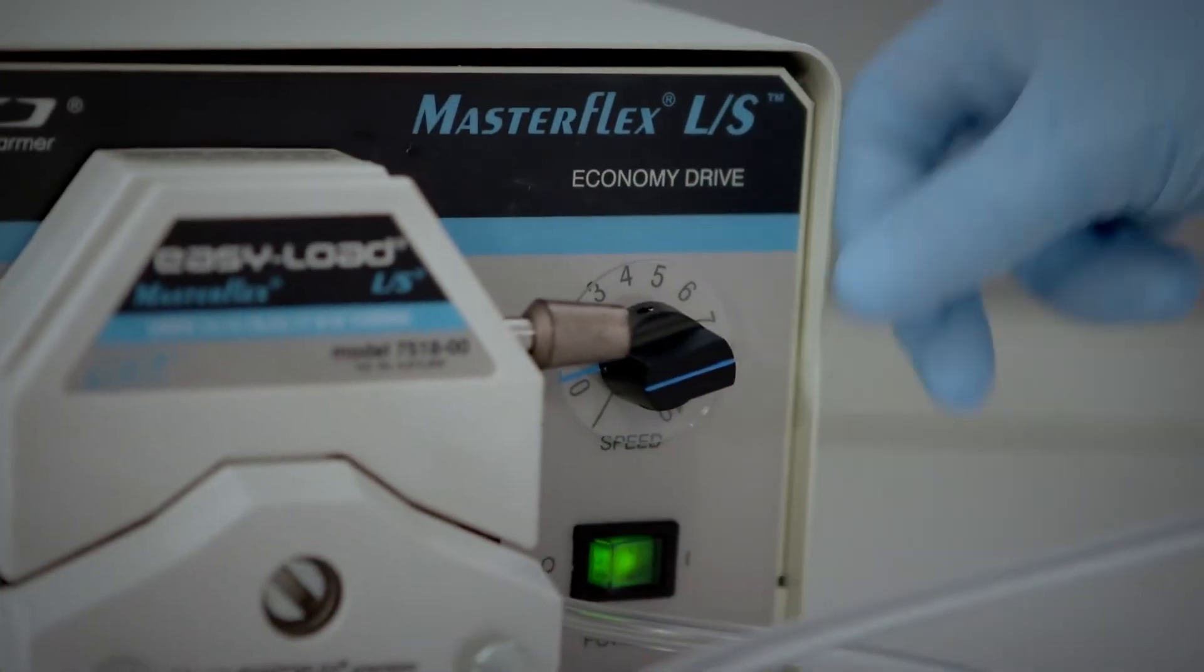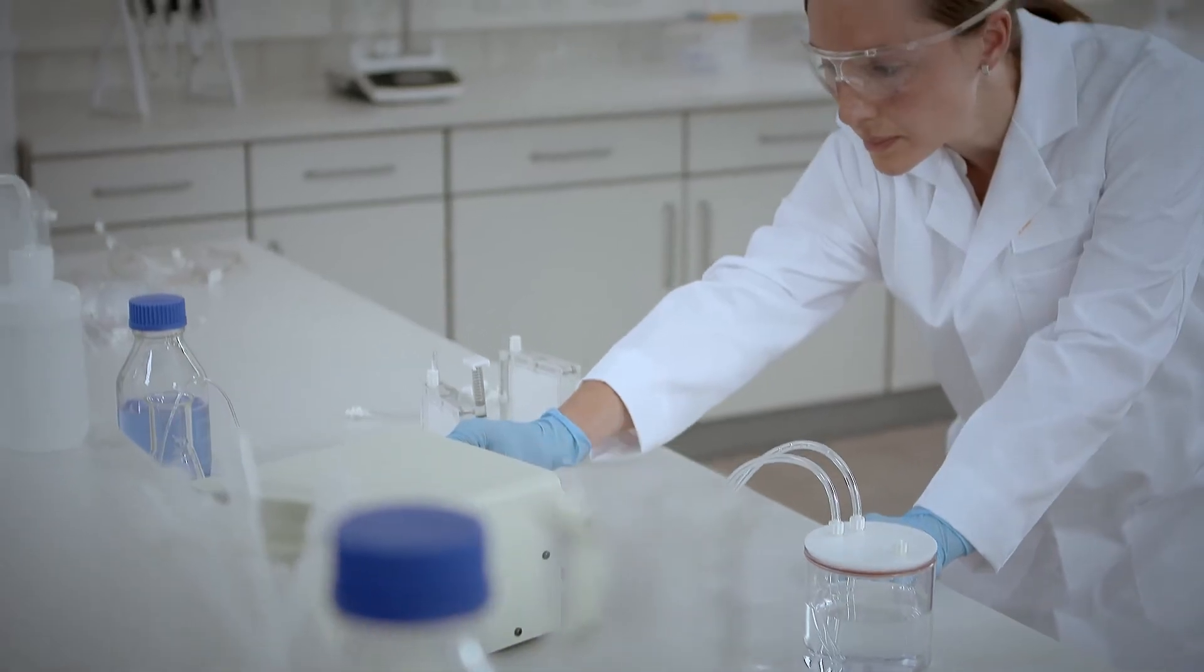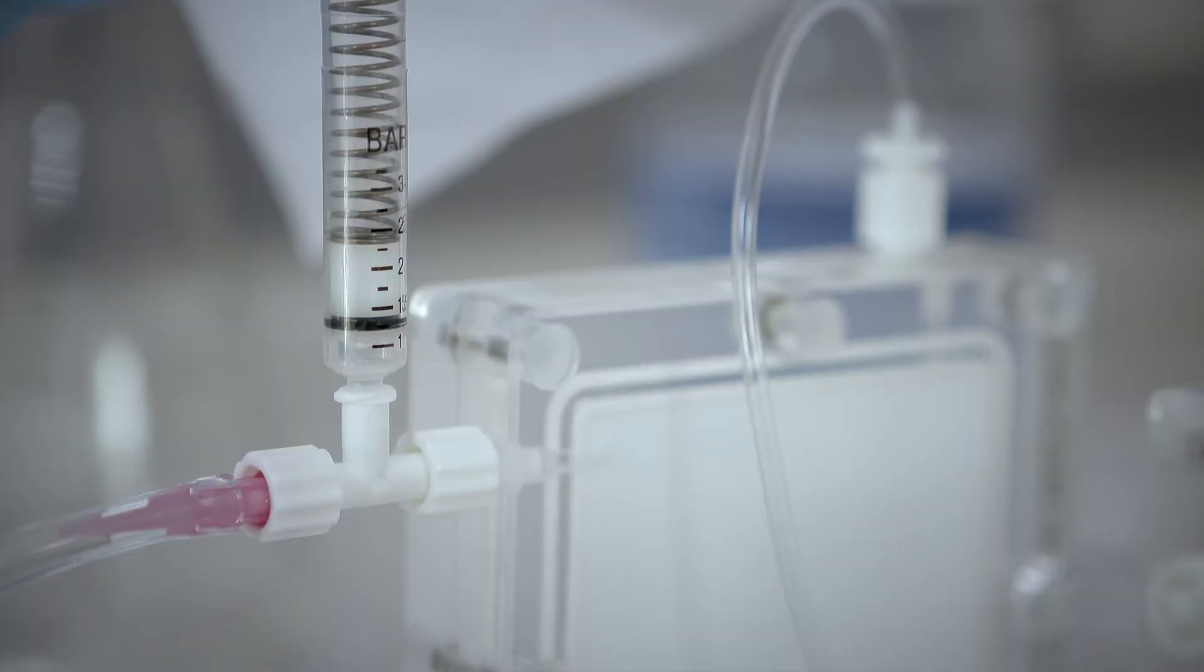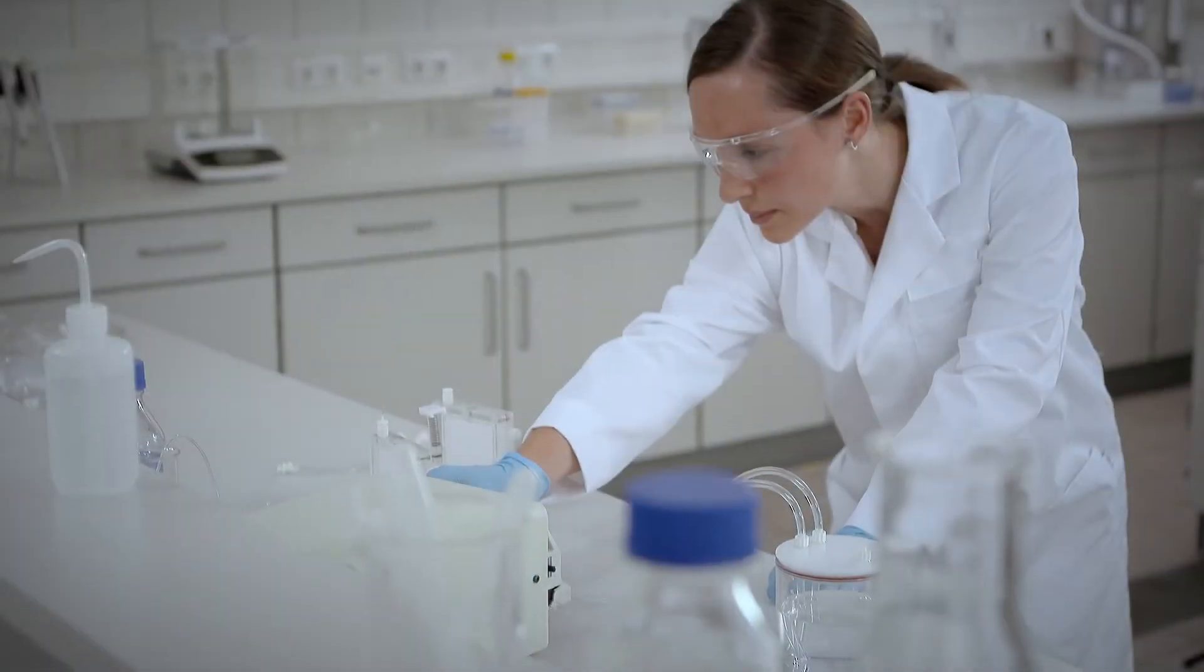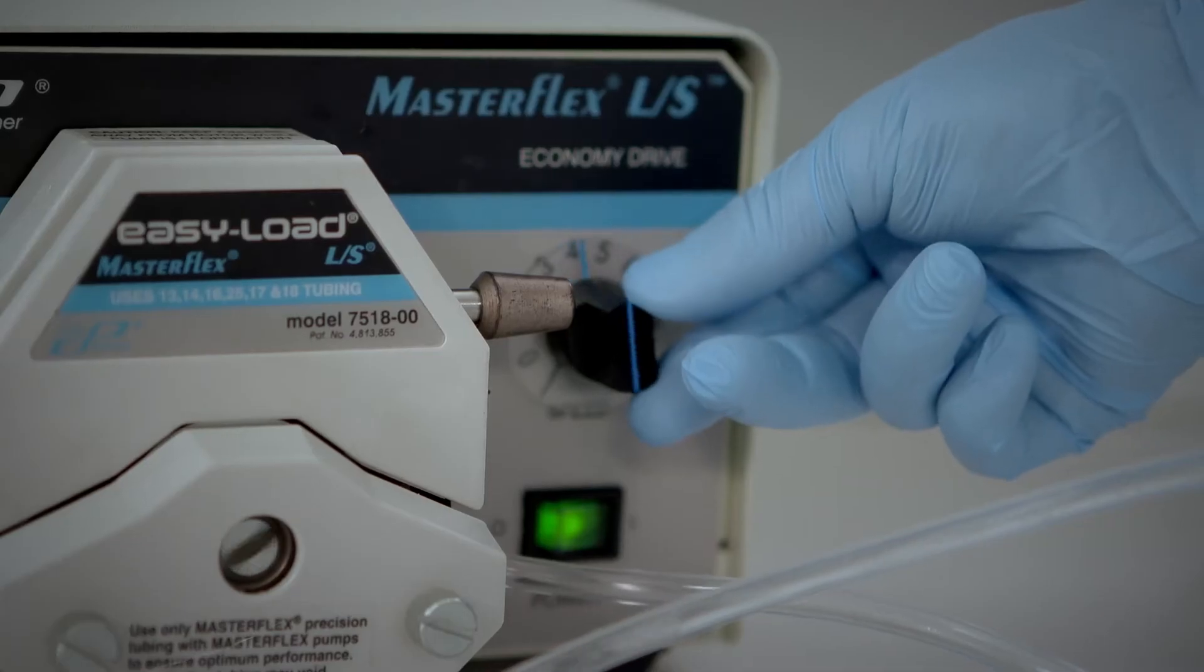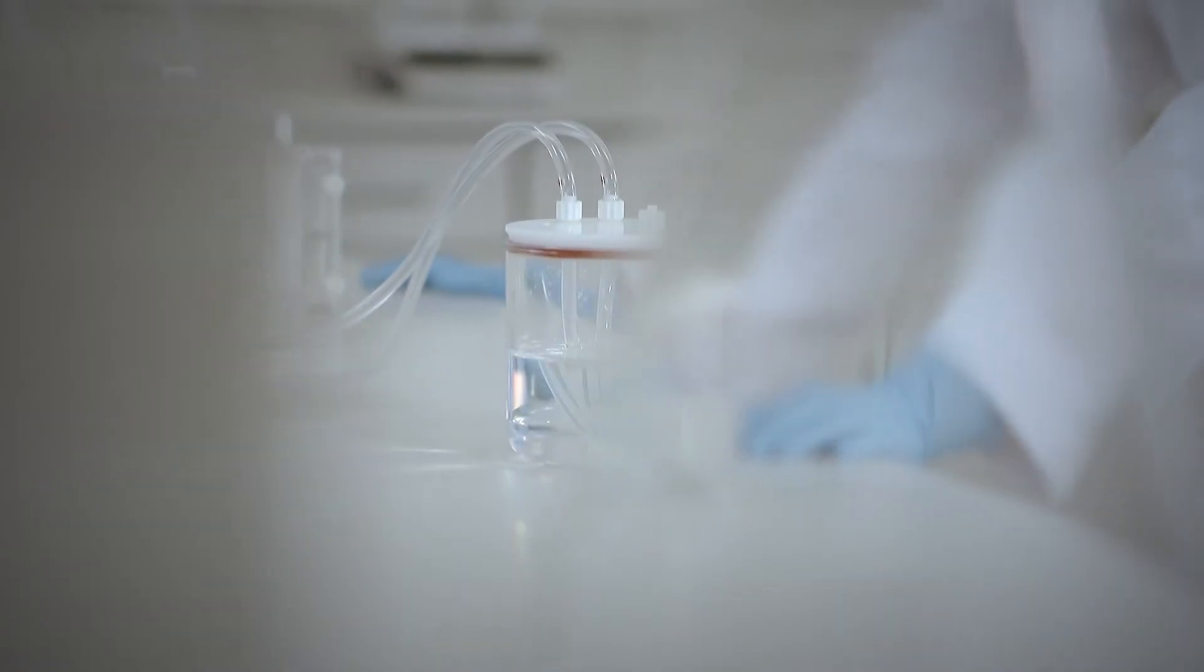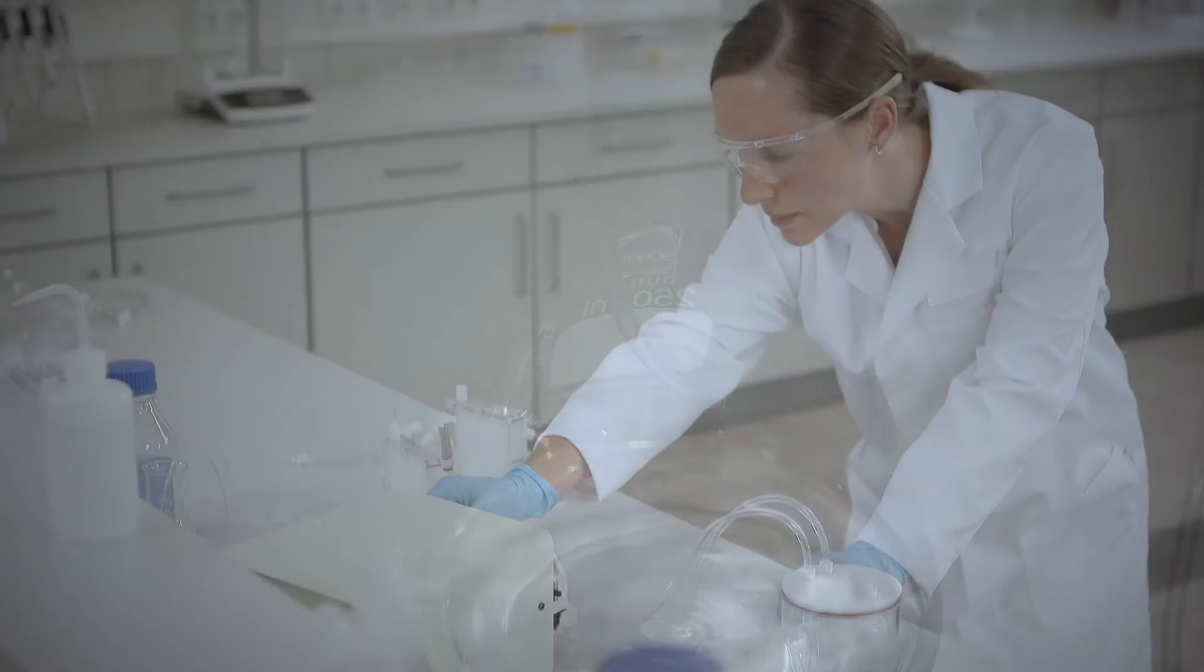Switch on the pump and slowly increase the pump speed up to a maximum pressure of 3 bar or 45 psi. As a rule, this pressure is reached after turning the pump speed to level 6 to 7. The concentration run has begun once filtrate starts to drip from the filtrate tubing into the filtrate collection vessel.